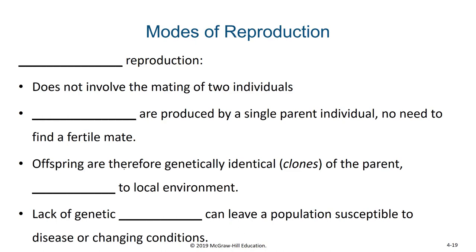The first category of reproduction we'll talk about is asexual reproduction. Asexual reproduction does not involve the mating of two individuals. Instead, offspring are produced by a single parent individual — there's no need to find a fertile mate. The offspring, therefore, are genetically identical, or clones, of the parent. If the parent was able to survive to adulthood in the current environment, we also know that the offspring of asexual reproduction will be adapted to their local environment.